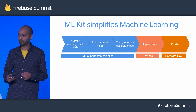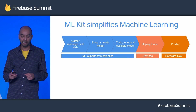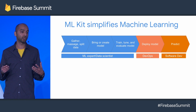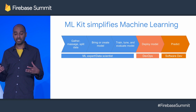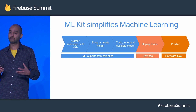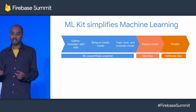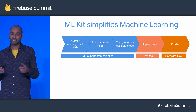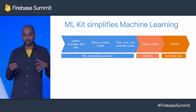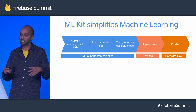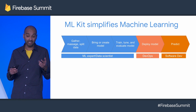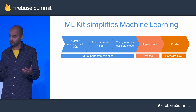Let's look at what the workflow looks like for a typical machine learning developer today. First, they would have to find a problem that they want to solve using machine learning. Then they would have to gather data, massage it, split it. Then they have to find a model that they need to train, and you might want to tweak that. Then you take the data with the model, train the model, tune it, evaluate it. You do that a bunch of times, and you need an ML expert or data scientist to be able to do that.